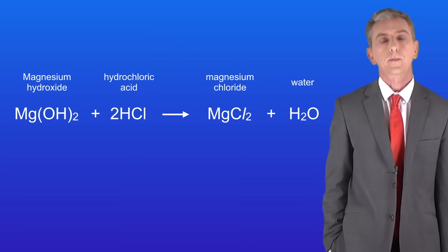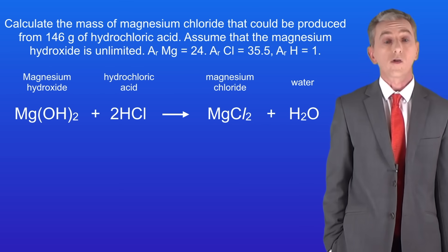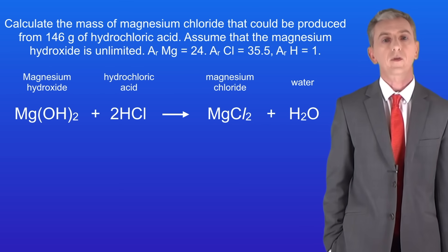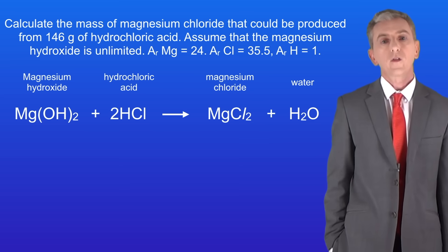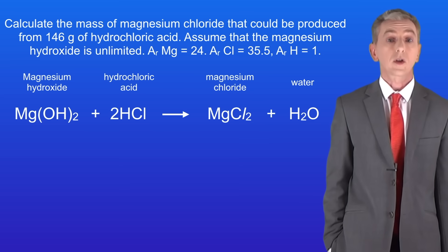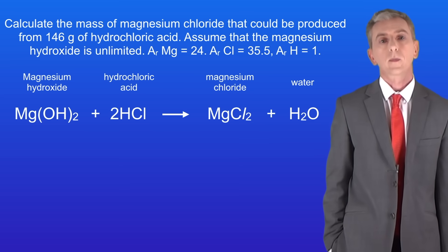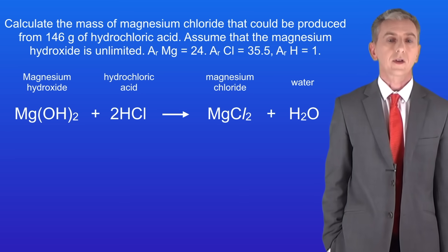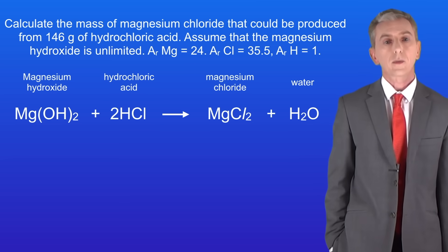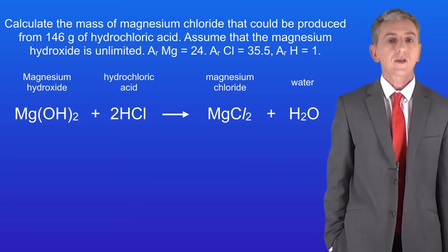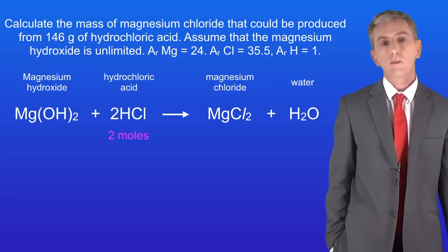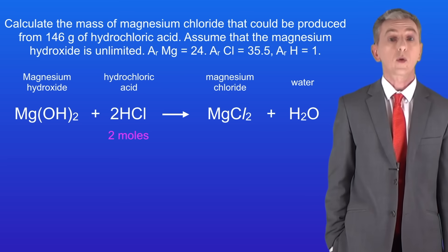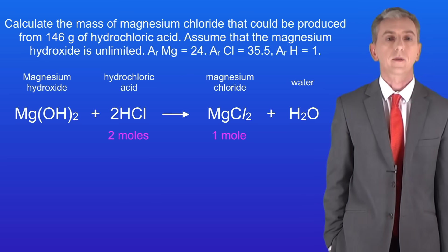Let's look at a sample question. Calculate the mass of magnesium chloride that could be produced from 146 grams of hydrochloric acid. The first thing we need to do is look at the big numbers in the equation. We've got a large 2 in front of the hydrochloric acid and no number in front of the magnesium chloride. This tells us that 2 moles of hydrochloric acid make 1 mole of magnesium chloride.